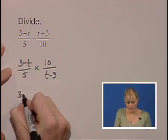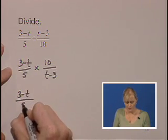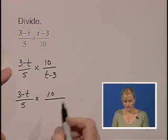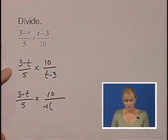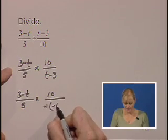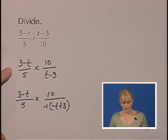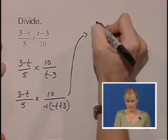So I'll leave my 3 minus t and my 5. I'm going to factor out a negative 1 so that I'll end up with a minus t and a positive 3. Now we can rewrite that and we'll do that up here.